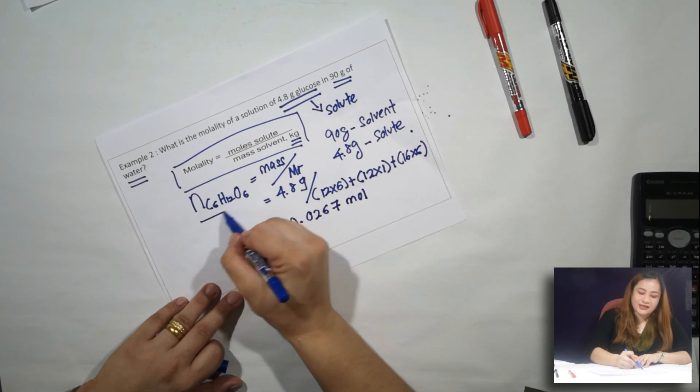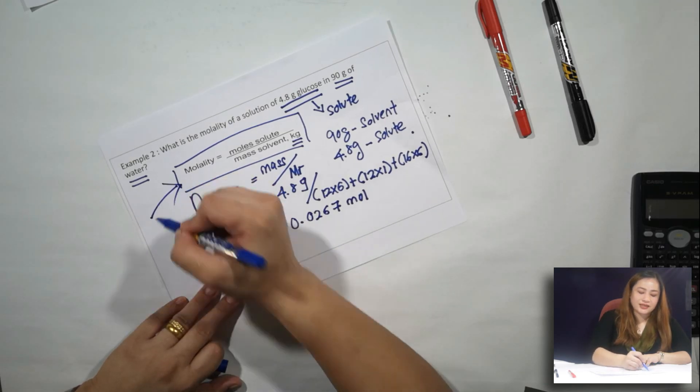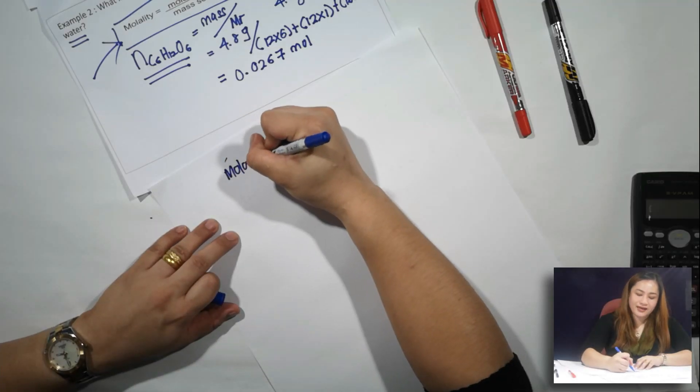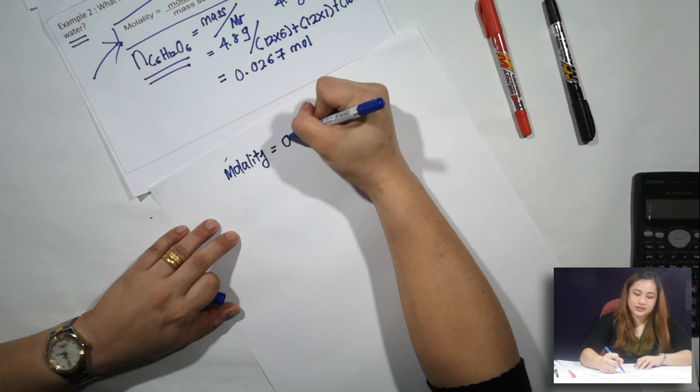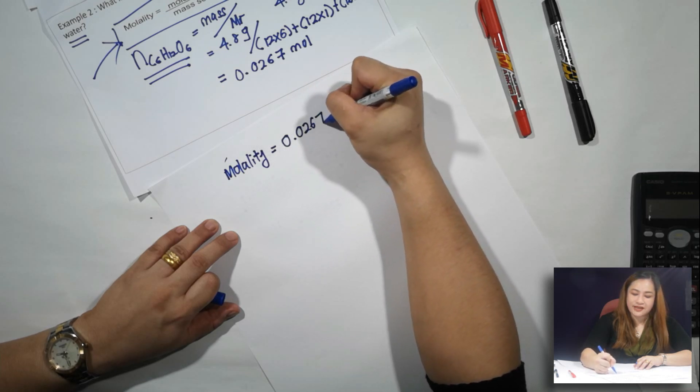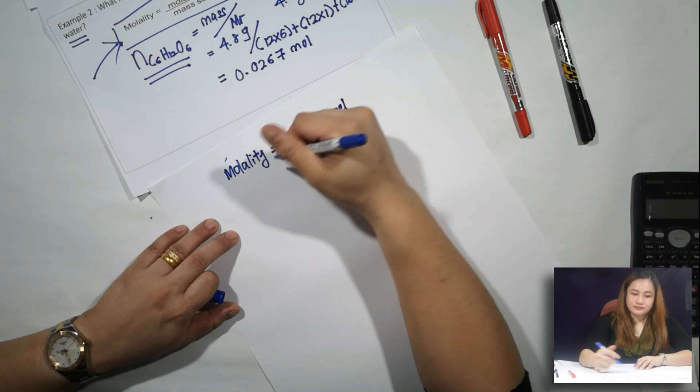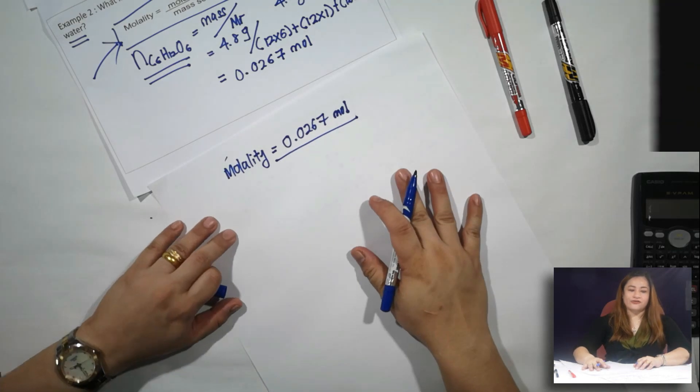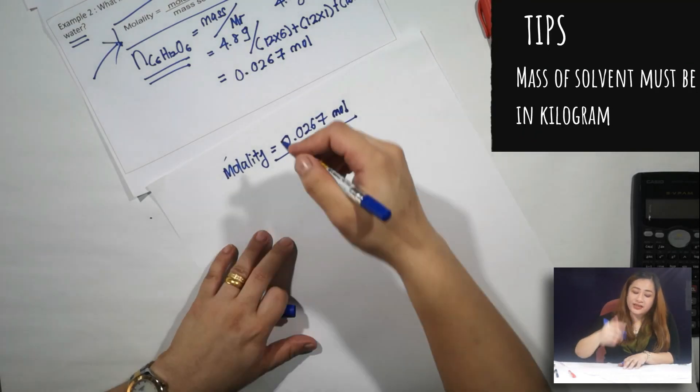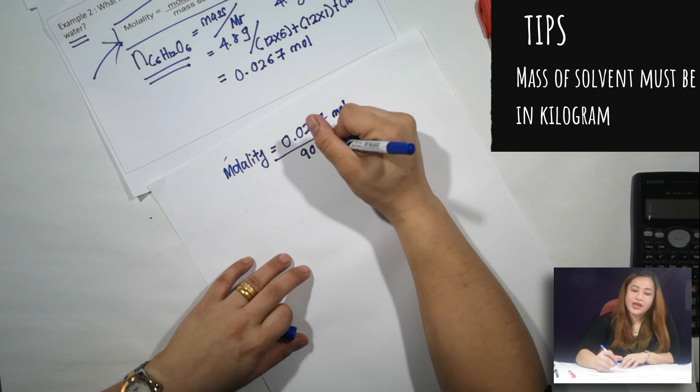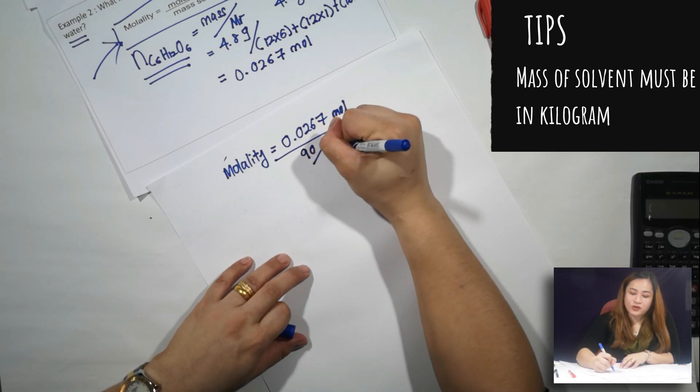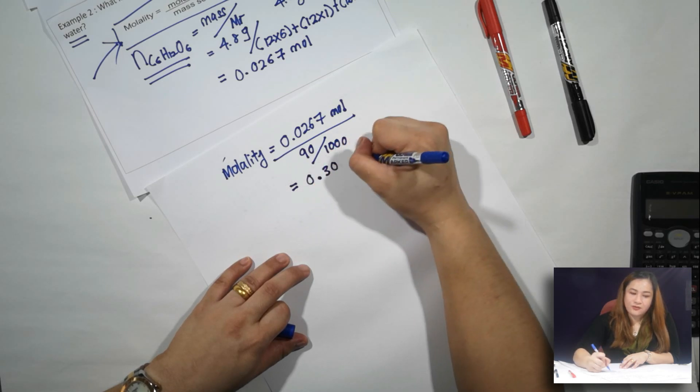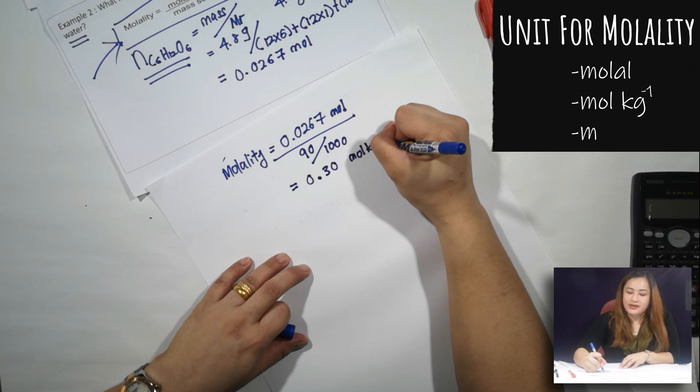Now that you get the number of moles of solute, you can insert it into the formula, which is molality equals 0.0267 moles over mass of your solvent in kilograms. So you need to convert it into kilograms. So 90 grams you need to divide with 1000 and the answer will be 0.30 moles per kilogram.